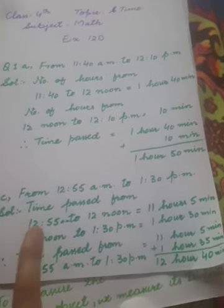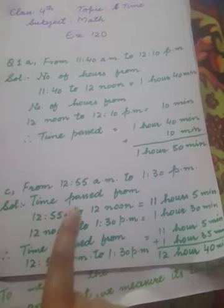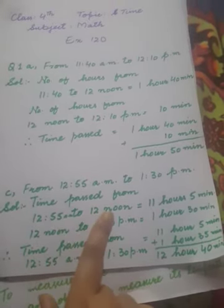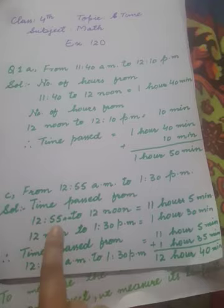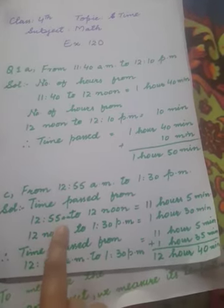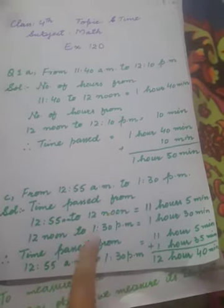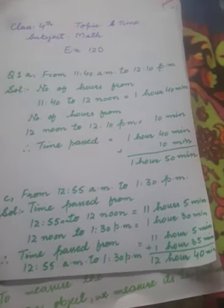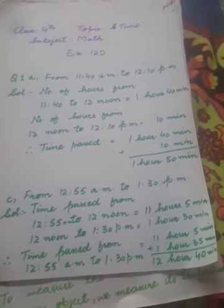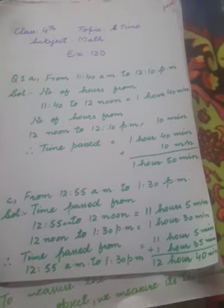In the same way, for part b: the time passed from 12:55 AM to 12:00 noon. That is, from 12:55 AM (midnight) to 12:00 noon, 11 hours 5 minutes have passed. And from 12:00 noon to 1:30 PM, 1 hour 30 minutes have passed.